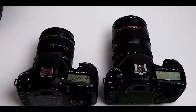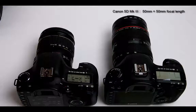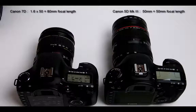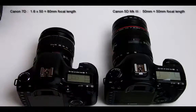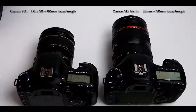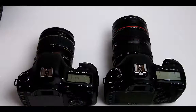Number eight: if you are using a full-frame camera such as the 5D Mark III with a 50mm lens, the focal length will be 50mm. If you are using a crop sensor camera such as the Canon 7D, it has a crop factor of 1.6, so a 50mm lens gives a focal length of 1.6 × 50 = 80mm. Number nine: using crop sensor DSLRs adds zoom to your lenses but takes away wide-angle capability.